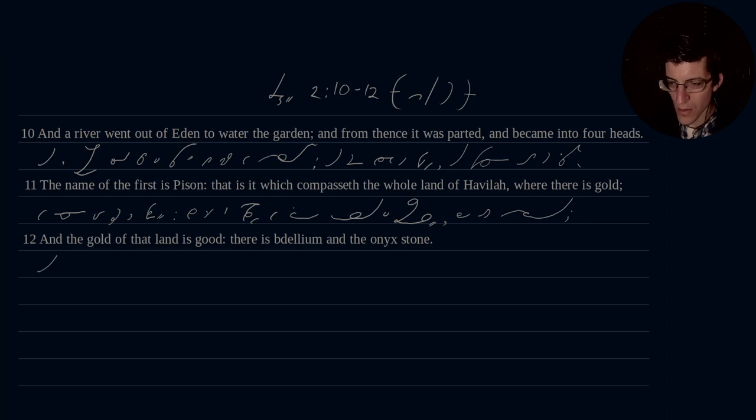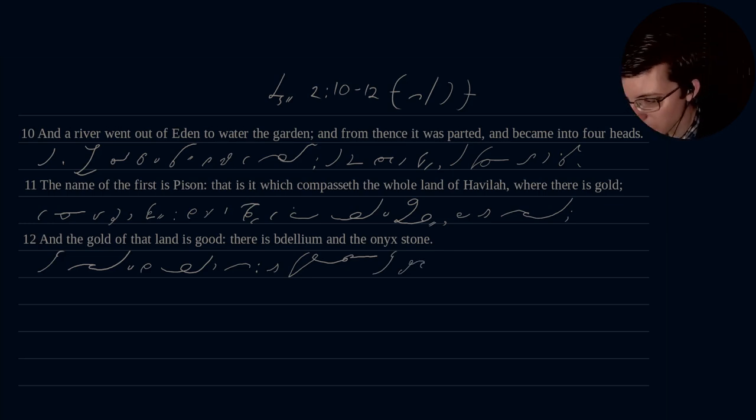And the gold of that land is good. There is bdellium. Bdellium. Now that's a fun word. Bdellium. And the onyx. Let me check if that was correct. It's another tricky one. And the onyx.